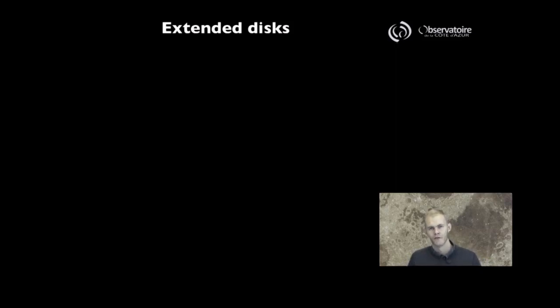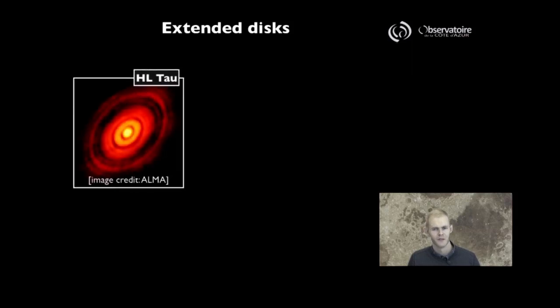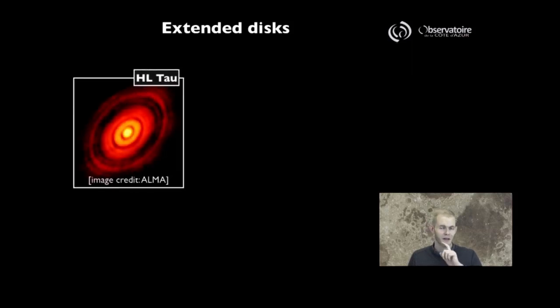I want to show you one more very cool object that was fairly recently imaged. This is actually an interferometric image from submillimetric measurements made by an array called ALMA. This is a very cool image of a very young system called HL Tau, which is a T Tauri star, a very young object about a million years old.